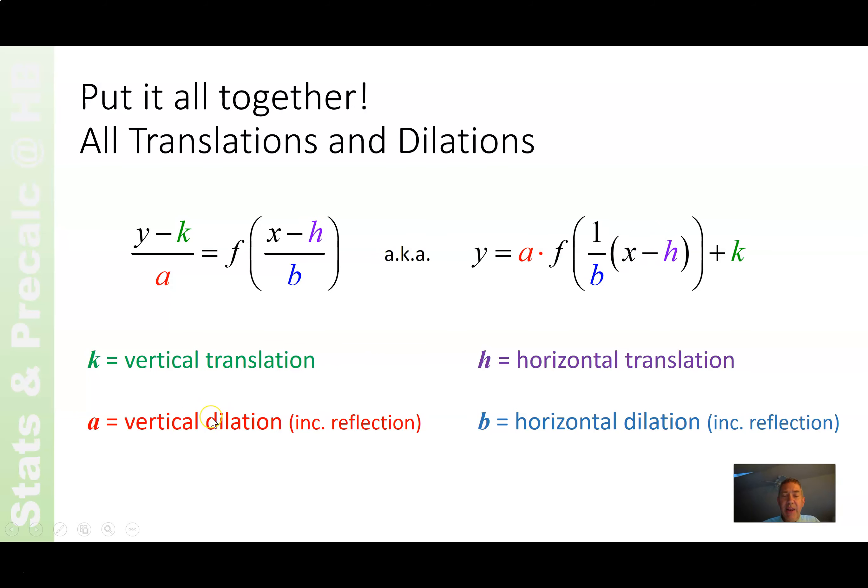The vertical dilation, how much it's stretched vertically, is a in both equations. The horizontal dilation, how much it's stretched horizontally, is b in both equations. A lot to think about. A lot of pieces to put together. But I'm confident you can do it bit by bit. And we are going to have a lot of practice as the year goes on with a lot of different functions. You will get good at it. Congratulations.